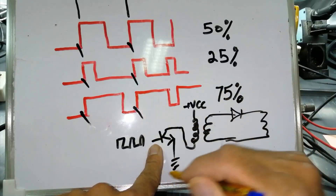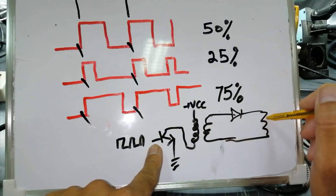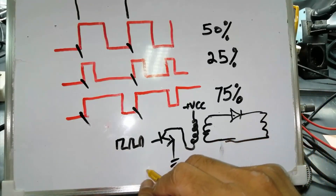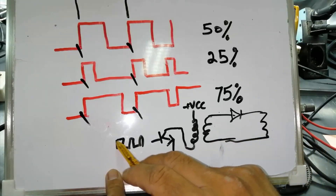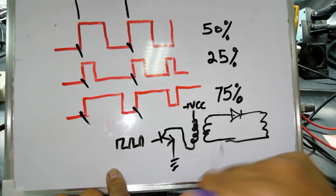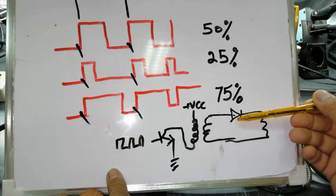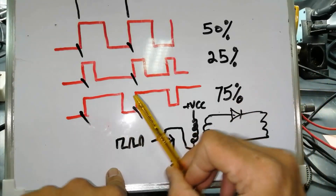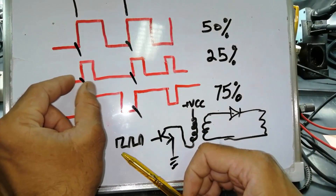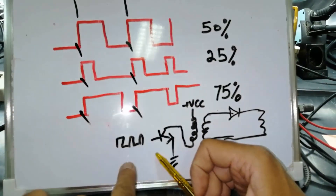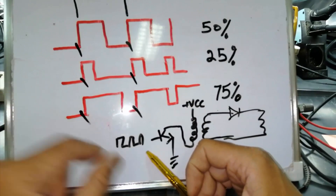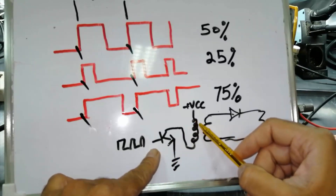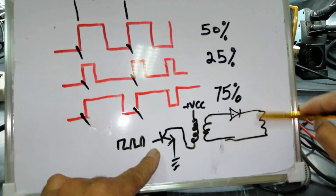This duty cycle is used to regulate the voltage. We have a feedback circuit — that feedback loop goes to the PWM controller. If the output voltage is going high, the PWM controller will reduce the pulse width, reducing the duty cycle. When the duty cycle is reduced, the switching time decreases, so the magnetic field reduces, induction reduces, and the voltage is regulated.